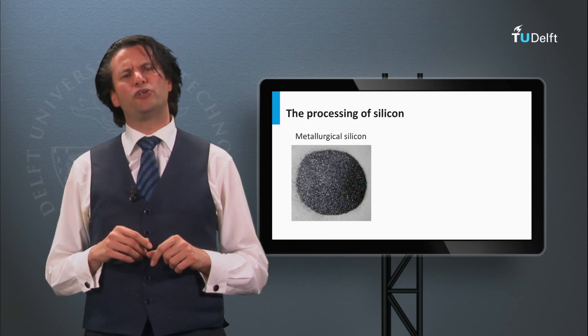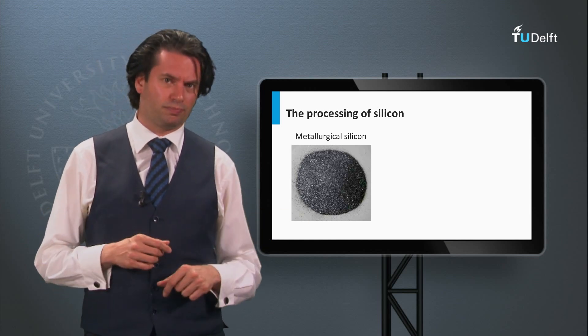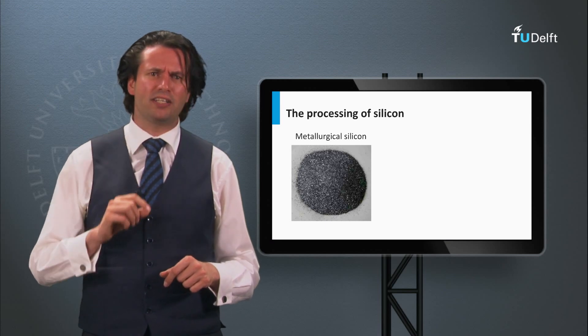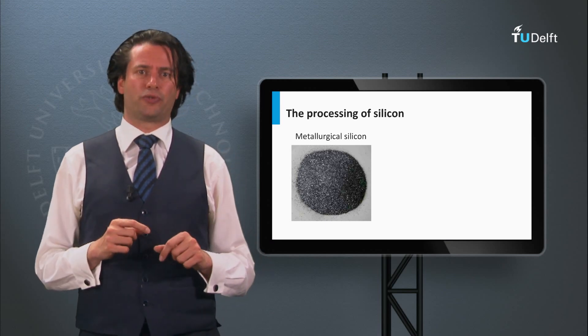The other 30% is being used to make a variety of chemical products like silicones. Only around 1% of the metallurgical silicon is used to make electronic grade silicon.